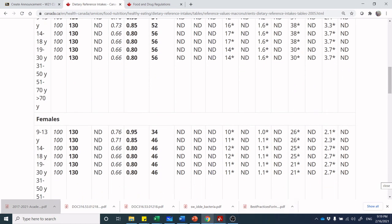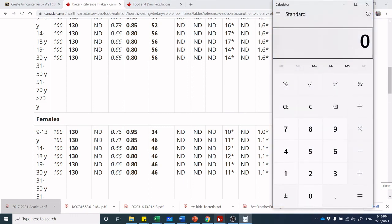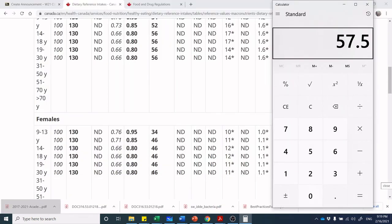They have established what that average male size is going to be and that average male according to them is going to be 70 kilos. Let's do the same for women. What do they determine that average woman to be? 46 divided by 0.8, so the average woman is going to be weighing 57.5 kilos, just under 60 kilos, and they've established those protein values based off of that.